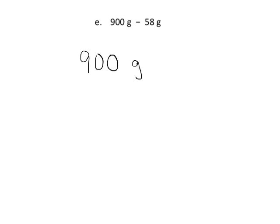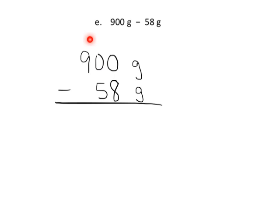This next one is going to be a little tricky because we have so many zeros, and students get freaked out by those zeros. We look at the ones column: 0 take away 8 — you can't do that. We go next door but there's nothing there, so we go all the way to the hundreds. We take the 9 hundreds and regroup to 8 hundreds and 10 tens. Then we take one of those 10 tens, leaving 9 tens, and make it 10 ones.